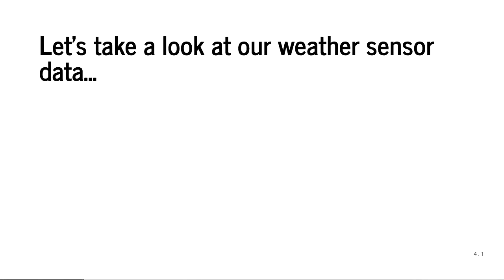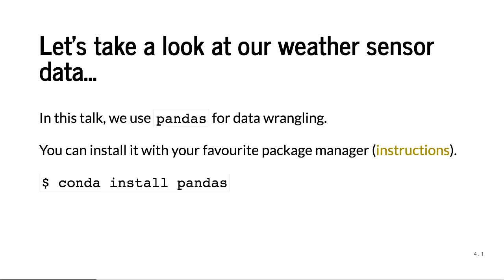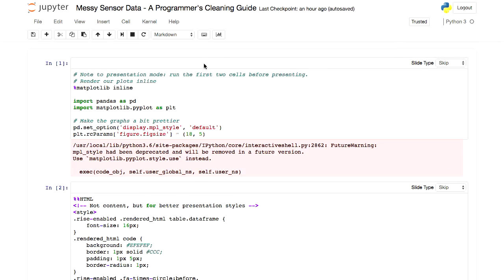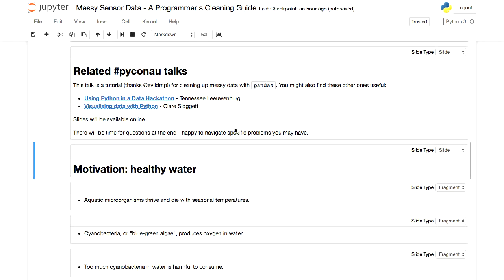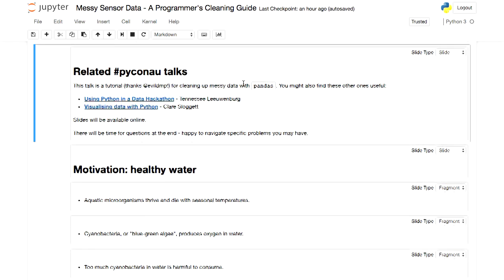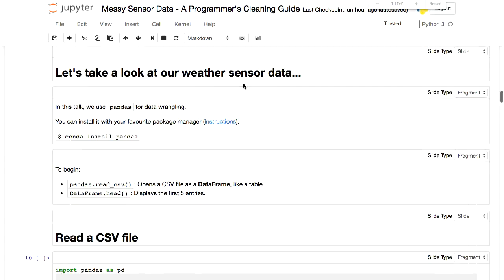Let's take a look at our weather data sets — these are commonly things you can find on the Bureau of Meteorology or other weather report sites. In this talk, we'll be using pandas for data wrangling. You can install pandas with your favorite package manager like Anaconda, Miniconda, or pip. I'm going to quit the presentation because the resolution is too small and show you directly using the Jupyter notebooks, so you can actually read everything.